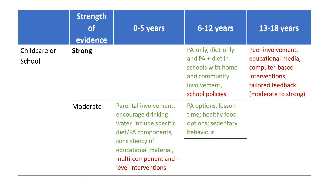In the childcare or school setting, the new evidence points to the importance of school policies in 6–12 year olds, and for teenagers, the importance of peer involvement, including tailored feedback.